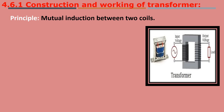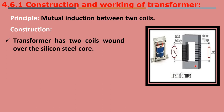The principle of a transformer is mutual inductance between two coils. There are two coils — the primary coil and the secondary coil — and the mutual inductance between them is the principle of the transformer. For construction, two coils are wound over a silicon steel core. The primary coil and the secondary coil are wound over the same steel core.